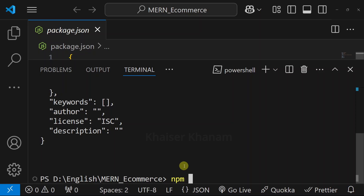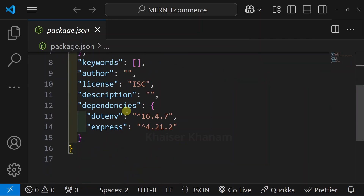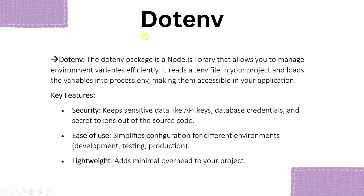Now here, I will install two packages. I will write npm i — i stands for install. I will write express, and then I want to install dotenv. I will hit enter. Now packages are installed. To check, open package.json and inside the dependencies, we are having these two packages. Express is a minimal and flexible web framework for Node.js, and using this we can easily build server-side applications, handle different routing, use middleware, and it is widely used for creating APIs and web applications.